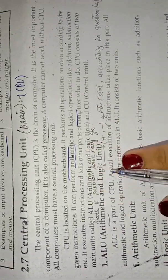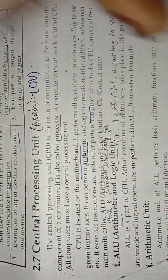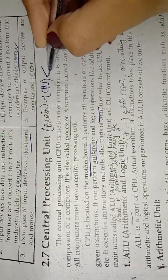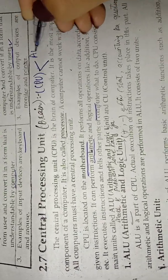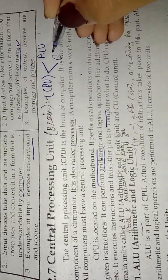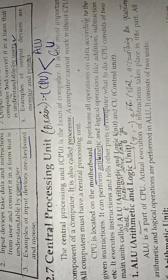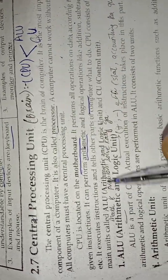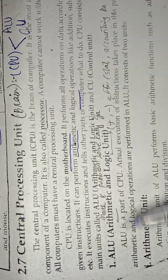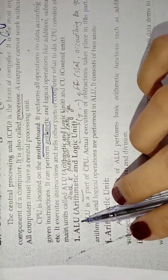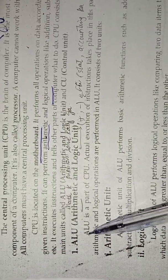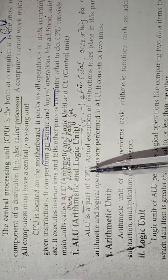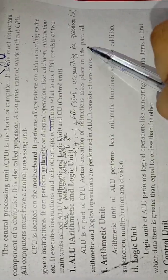The CPU consists of two main units: the ALU — Arithmetic and Logic Unit — and the CU — Control Unit. The Arithmetic and Logic Unit and the Control Unit are the two main components of the CPU.